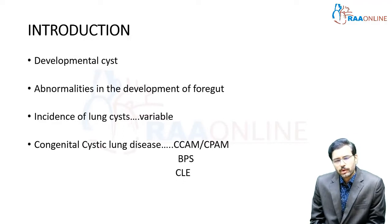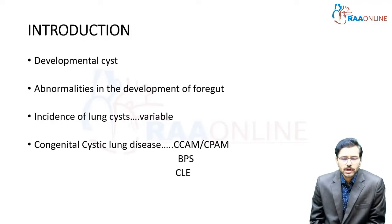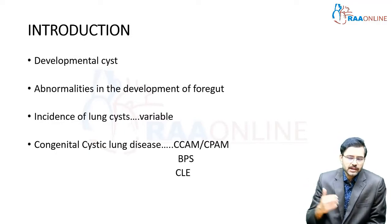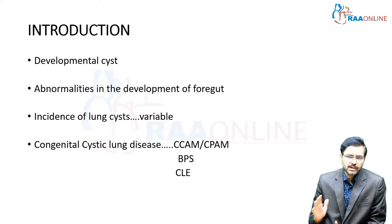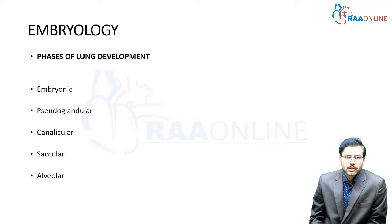The first is cystic congenital cystic adenomatoid malformation, now commonly called congenital pulmonary airway malformation (CPAM). The second is bronchopulmonary sequestration, or BPS. The third is congenital lobar emphysema. These three conditions are the three most important components of congenital lung cysts.